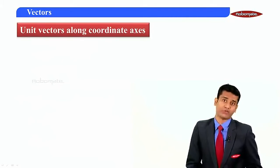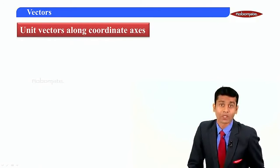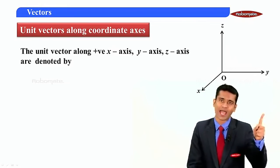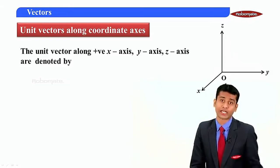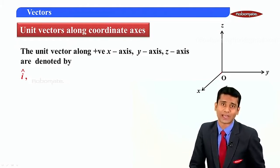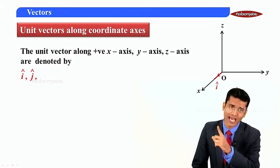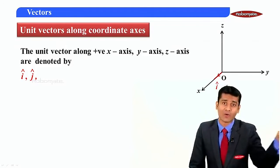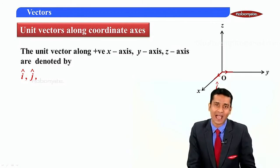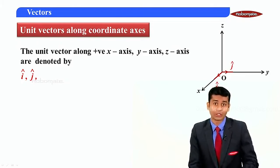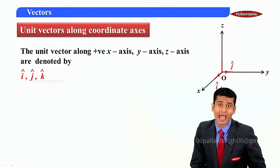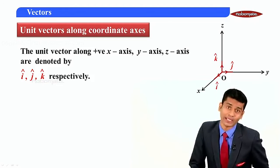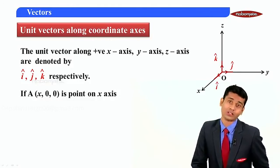Now we come to the new concept of unit vectors along the coordinate axes. Consider a space with three mutually perpendicular axes: x-axis, y-axis, and z-axis. The unit vector along the x-axis is denoted by i-cap, shown in the diagram. The unit vector along the y-axis is j-cap, and the unit vector along the z-axis is k-cap, also shown in the diagram.